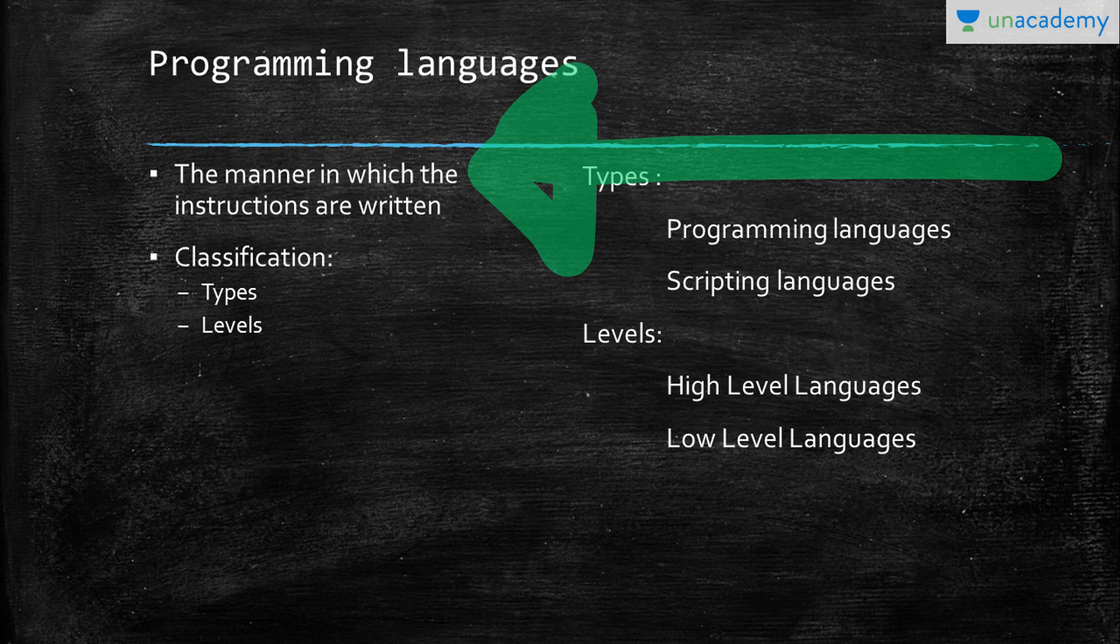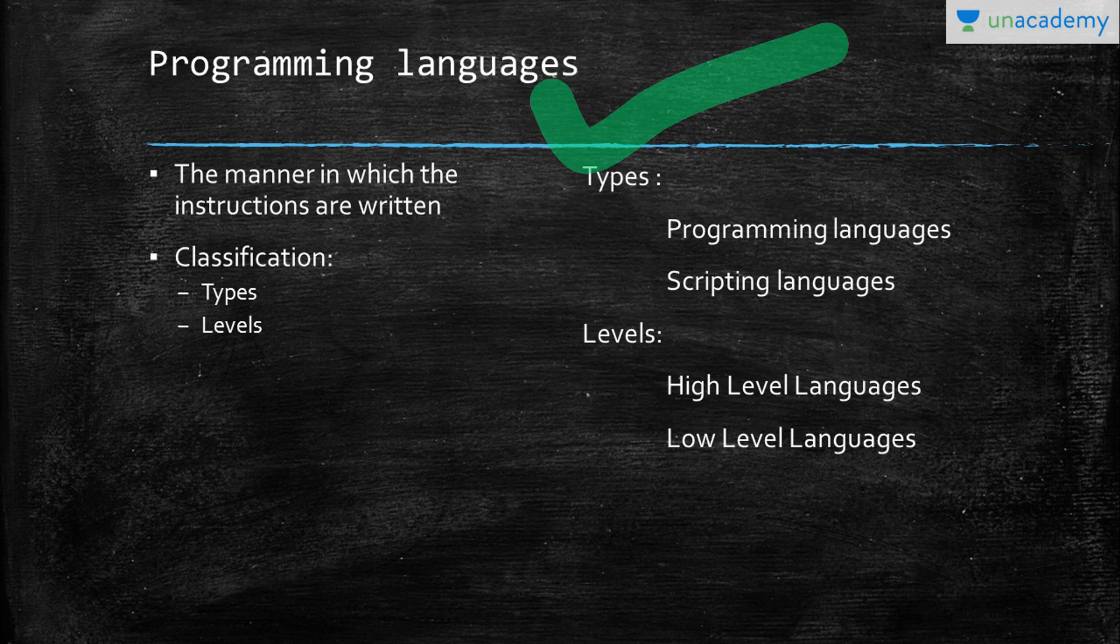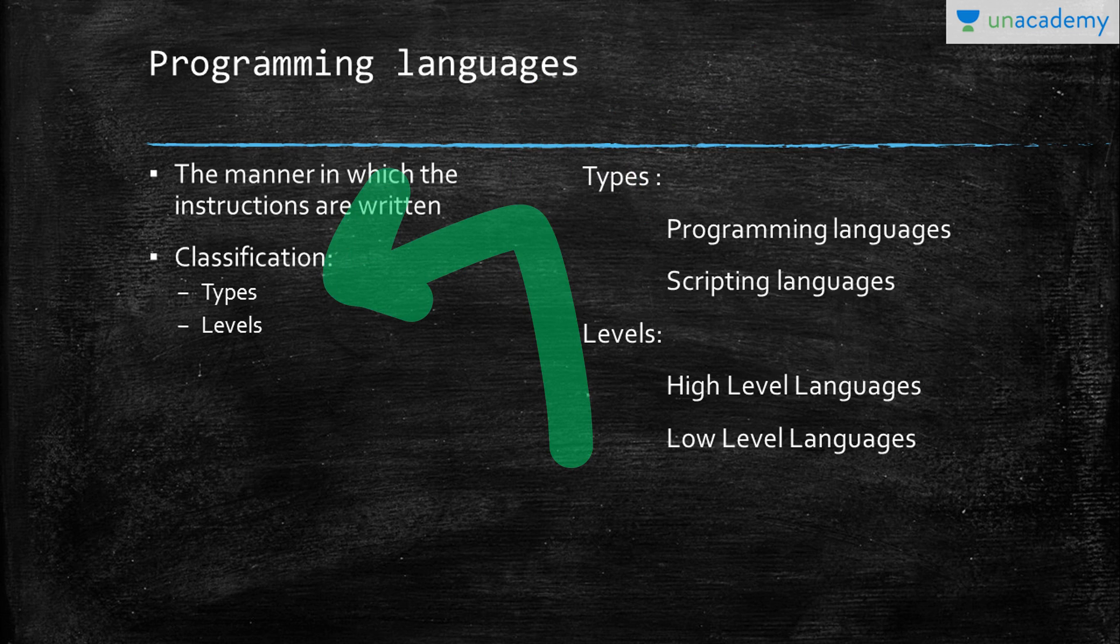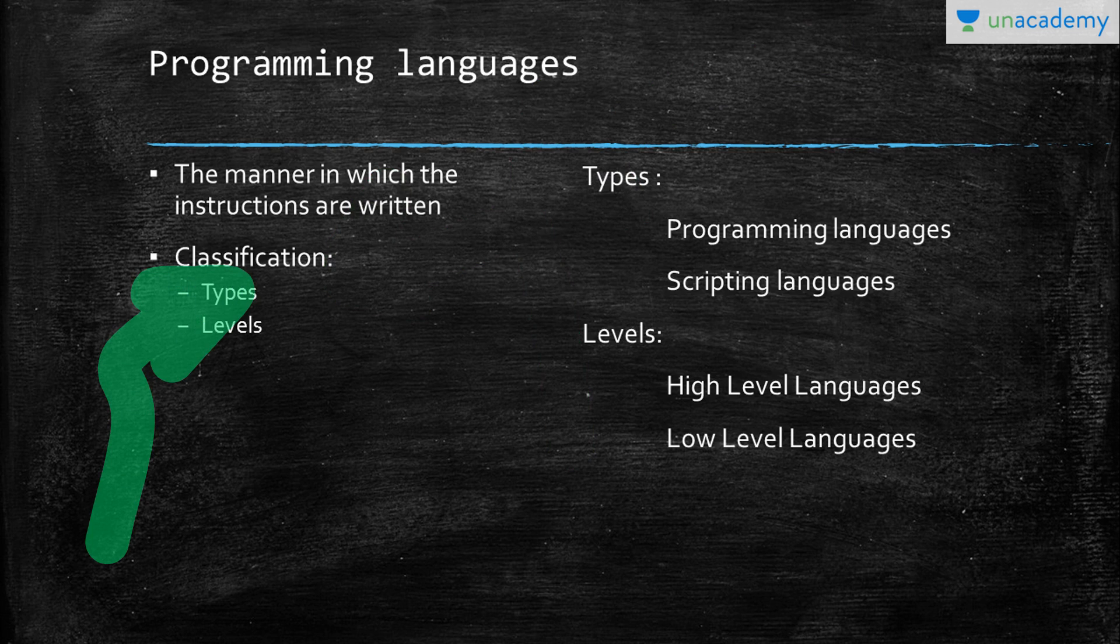If I'm explaining something to anyone, I can explain to them in English or Hindi or in other languages also. That's just the language of conveying a concept to another person. The same thing is implemented in programming languages. All programming languages can be broadly classified on two concepts: types and levels of programming.